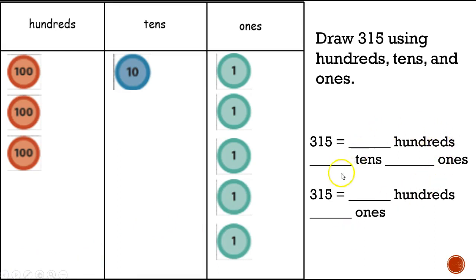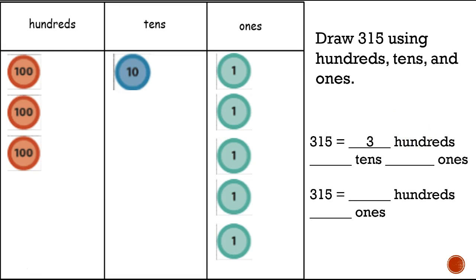Now let's fill out the chart. Three hundred and fifteen equals three hundreds, one ten, and five ones.